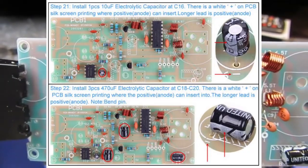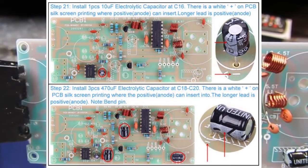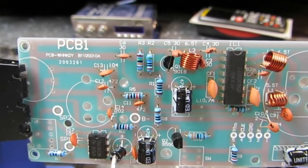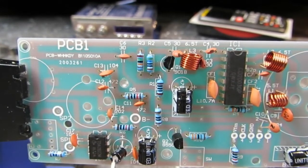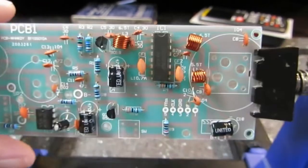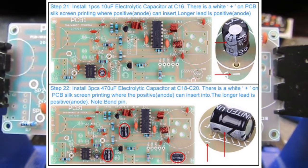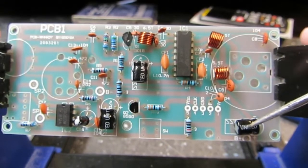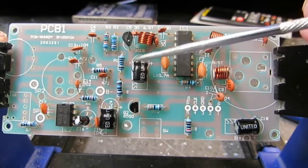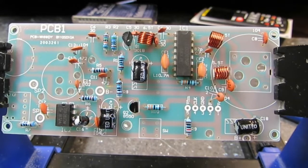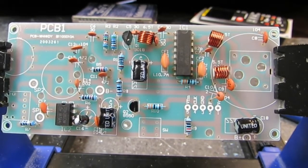We're back for step 21 and 22. Step 21 is to install a 10 microfarad electrolytic capacitor here at C16. I got that in there correctly. There's the positive lead on top. Bottom is the negative. The other ones are the bigger 470 UF electrolytics. And they go in between C18, C19, and C20. And those are installed here. Those are all installed the correct way. And that's good.